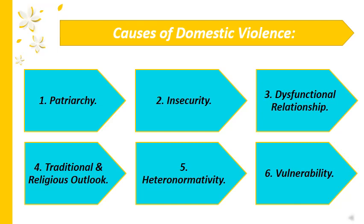The third cause is dysfunctional relationships. There are various factors responsible for strains in a spousal relationship or relationships between different members within the family. This could include personal insecurities, suspicion, age differences, cultural differences and incompatibility. This can trigger mean remarks, fighting, labeling, verbal spats and physical assault.